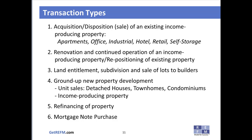There are several types of transactions represented in pro formas: first, acquisition or disposition of an existing income-producing property such as apartments, office, industrial, hotel, retail, or self-storage; second, renovation and continued operation, or repositioning, of an existing property; third, land entitlement, subdivision, and sale of lots to builders; fourth, ground-up new property development for unit sales (single-family, townhomes, or condominiums) or income-producing properties; fifth, refinancing—replacing an existing loan with a new loan; and sixth, the purchase of a mortgage note secured by a property.